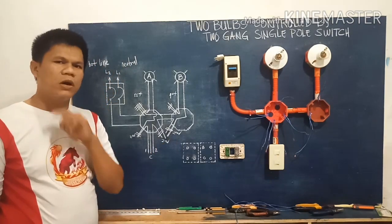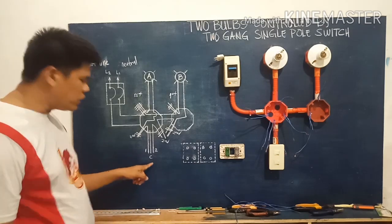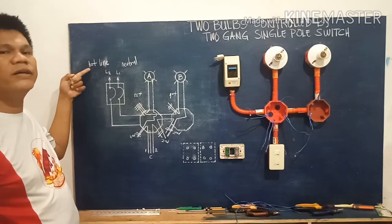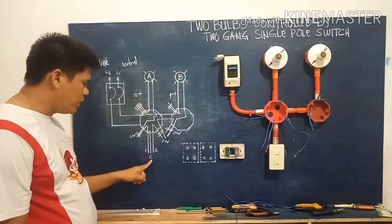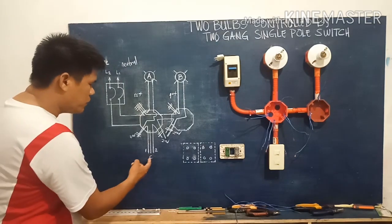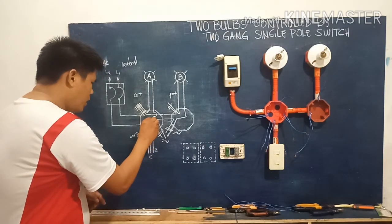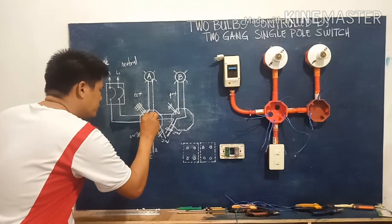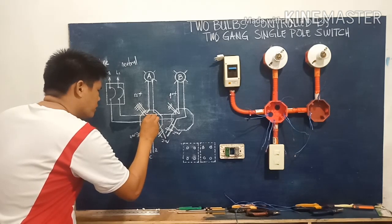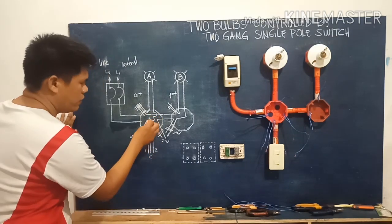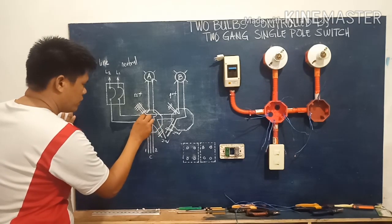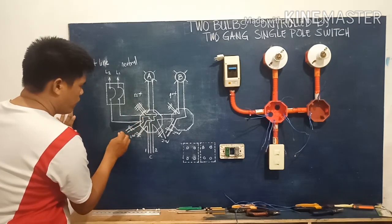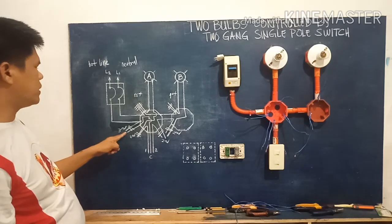We will proceed on our third cycle, which is from the control device going back to the source line, which is line two or the hot line. In this case, we only use the common terminal. So this common terminal is going to be distributed around this part here — that is the third cycle.